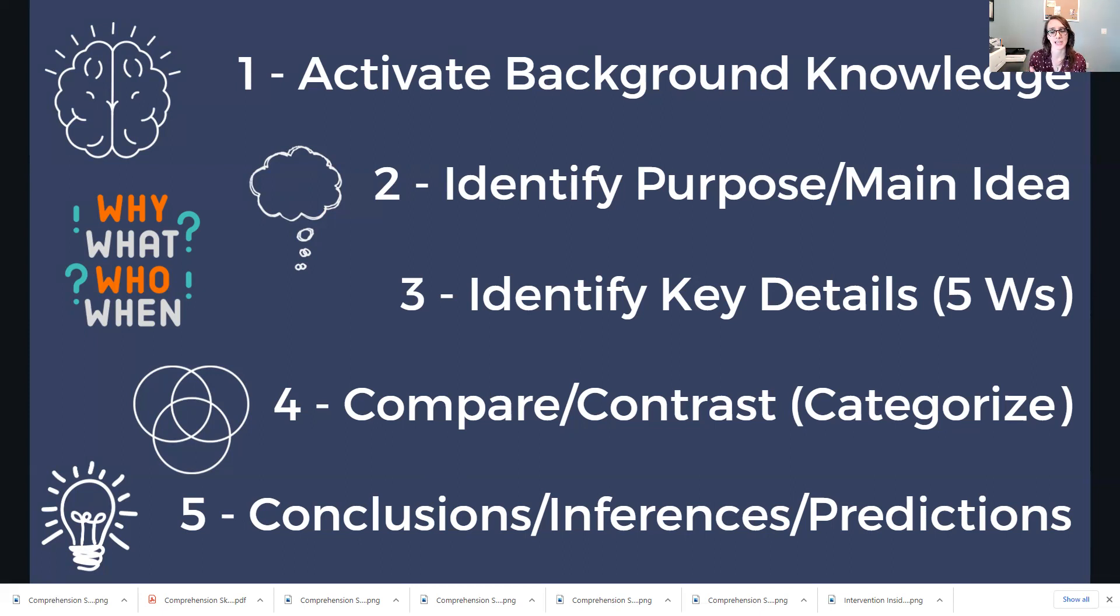And then finally we can jump into conclusions, inferences, and predictions. So as soon as we can take the information that we've gained from the text, really that main idea, those key details, then we can add it to that previous sort of background knowledge and comparing and contrasting with what we already know. That's going to allow us to create conclusions. And then from there we can start to make inferences. What does this mean? And what can I predict in the future?